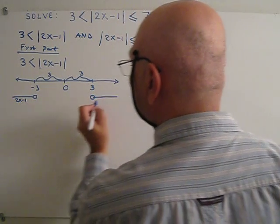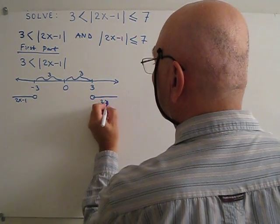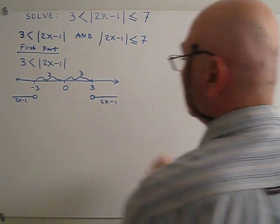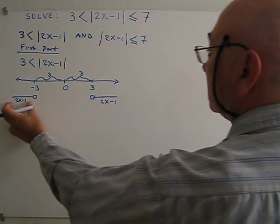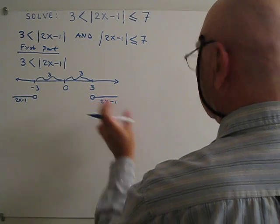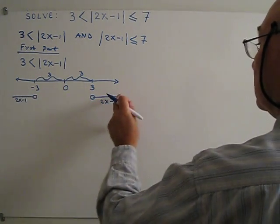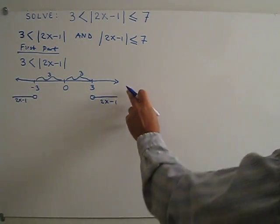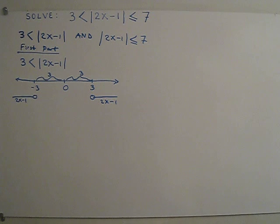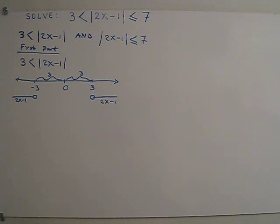So 2x minus 1 must be in this region here and here — this region goes to negative infinity on one side and up to positive infinity on the other side.